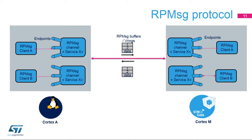On service registration, the RPMSG framework sends a name service announcement message to the remote processor. In this message, the address of the client endpoint is provided. On the remote processor side, the RPMSG framework checks if a local client has registered the same service. In this case, a channel is created between both RPMSG clients and the local RPMSG client is informed that a channel is bound.